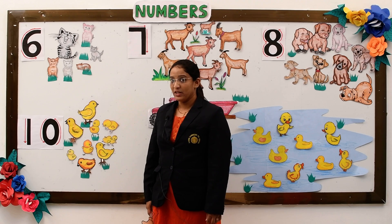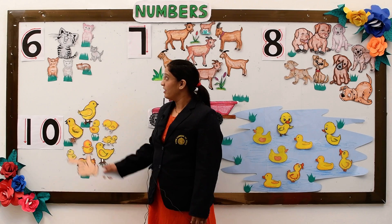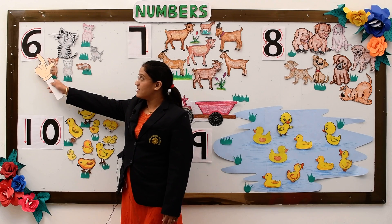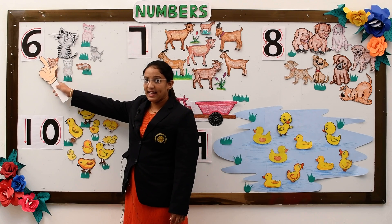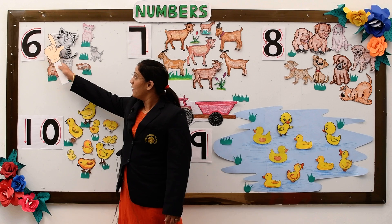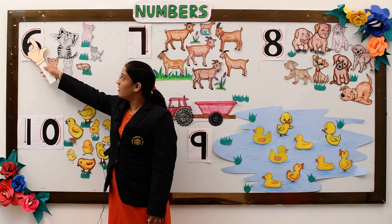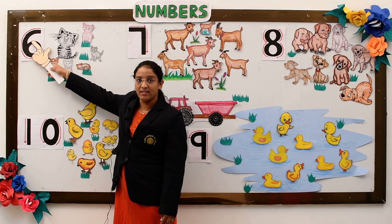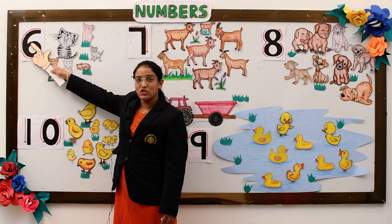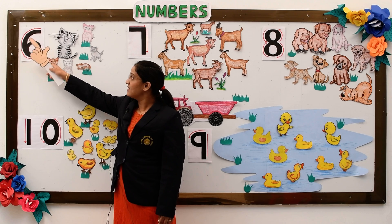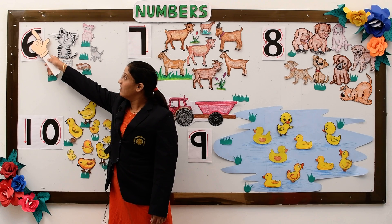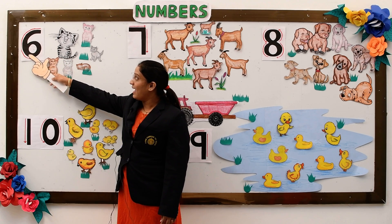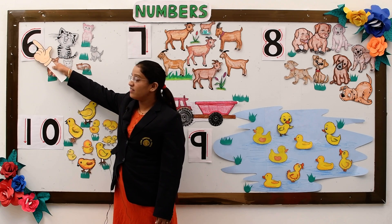The formation of number 6 is: make a curve and then a circle.